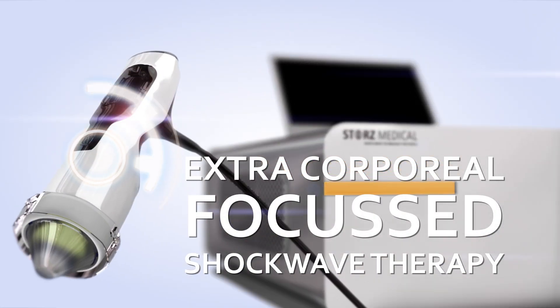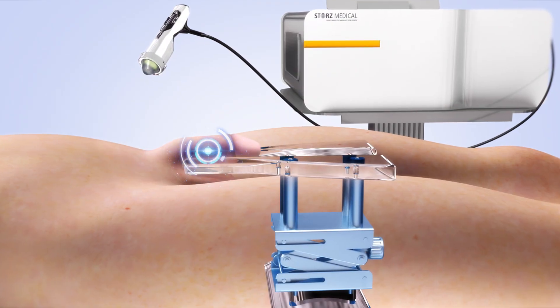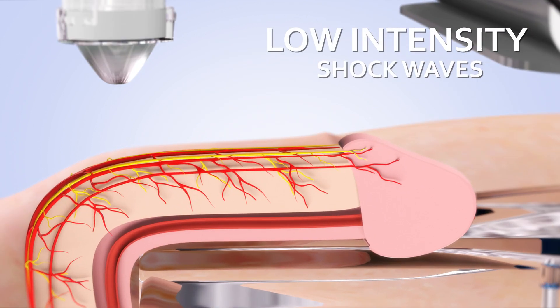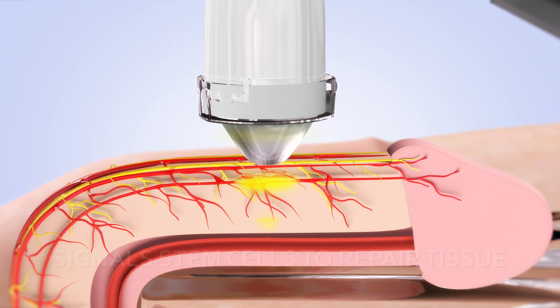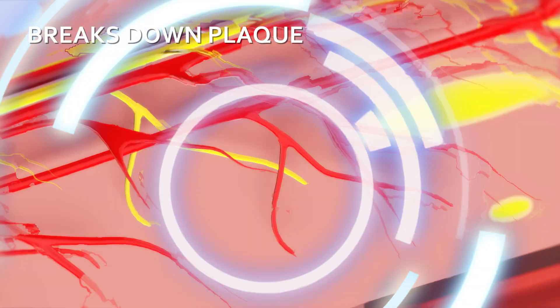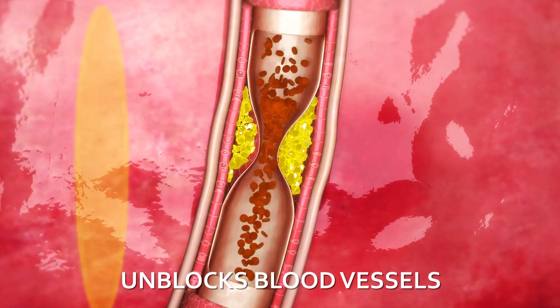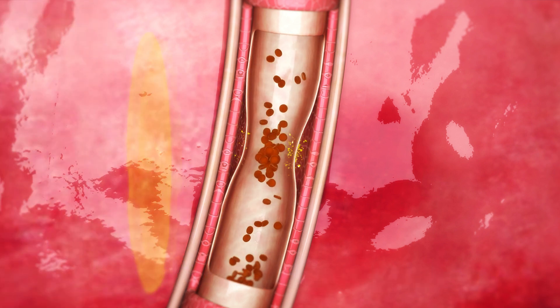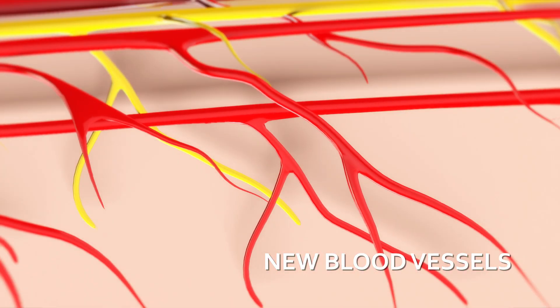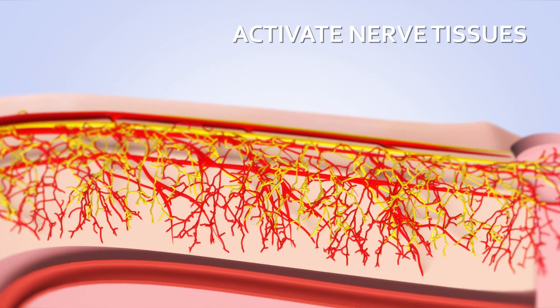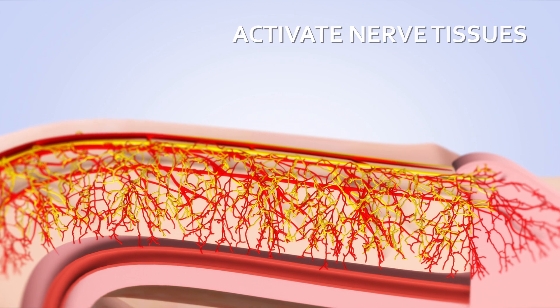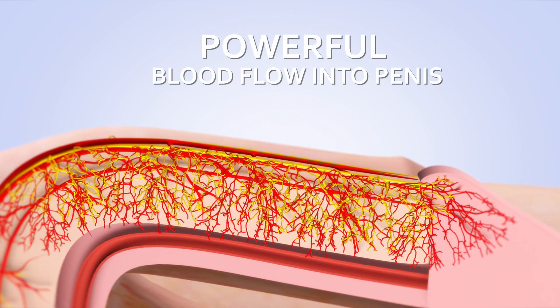Extracorporeal focused shockwave therapy targets the flaccid penis and emits low-intensity shockwaves, signaling stem cells to replace and rejuvenate damaged tissue. It breaks down plaque, unblocking blood vessels in the penis and enabling a faster flow of blood. This leads to the propagation of new and the repair of existing blood vessels and the activation of nerve tissues, resulting in a more powerful faster flow and build-up of blood in the penis.